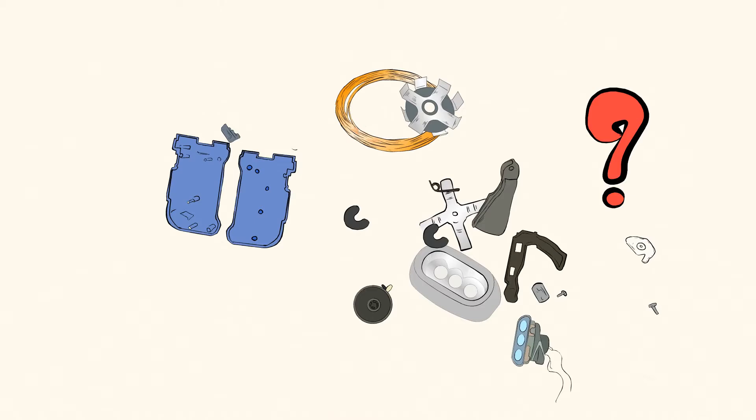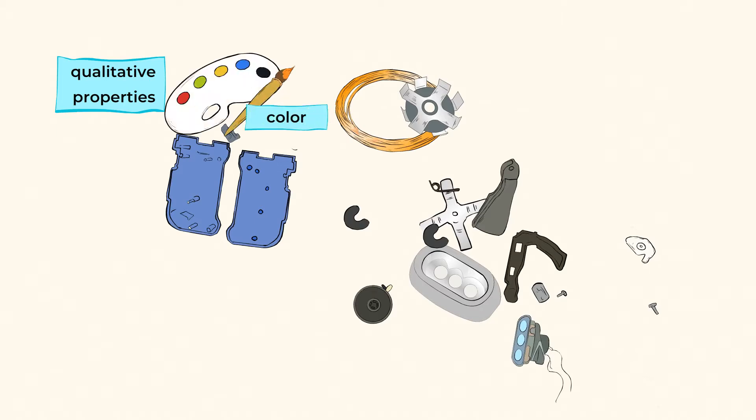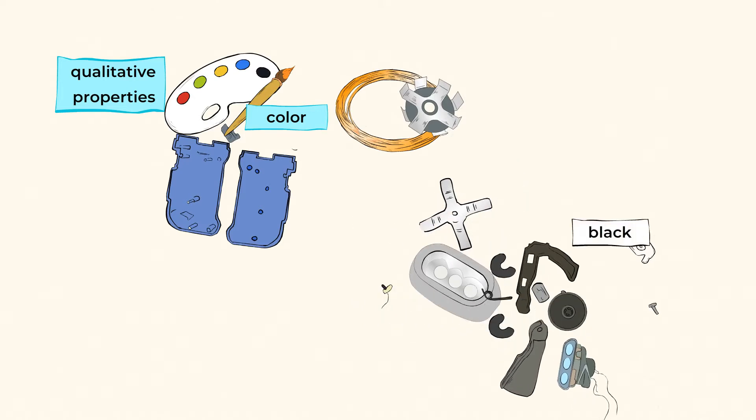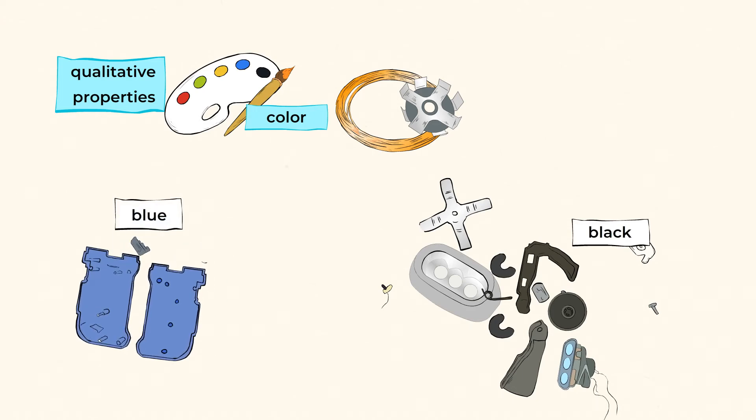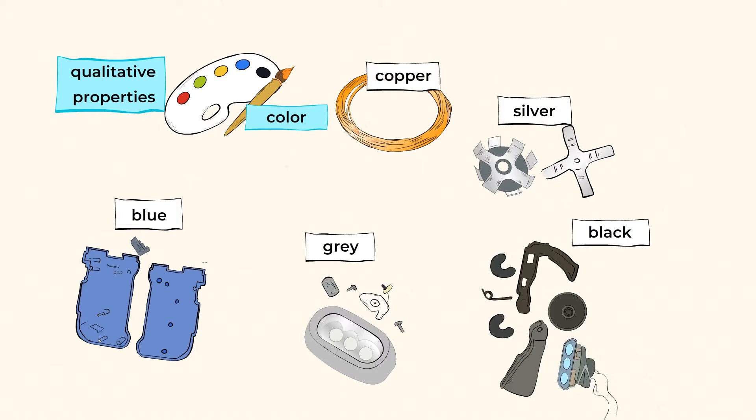Now, how can I describe these pieces? Well, I can observe the qualitative properties of them just by looking at them. So I'm going to start there. All these parts are hard, but they're also different colors. So I'm going to sort the black objects into one group, the blue objects into another group, the gray objects into a group, and the silver and copper colored objects into yet another group.